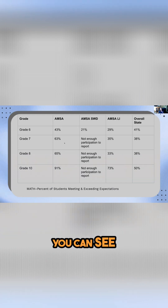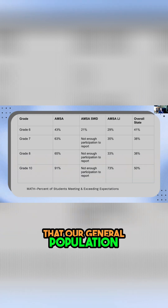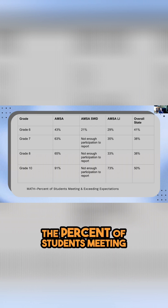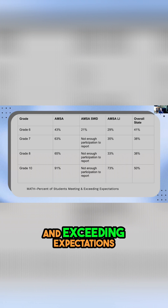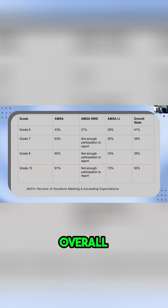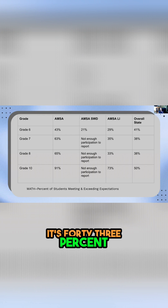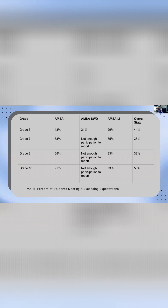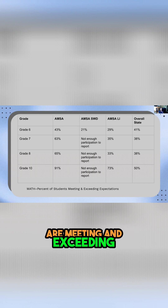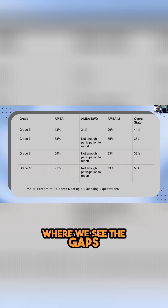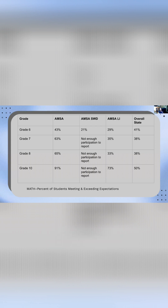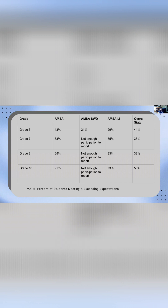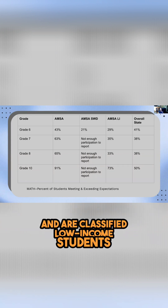At AMSA, you can see that our general population is doing well. This is the percent of students meeting and exceeding expectations. So overall, in grade six, it's 43%. But when we look at the students with disabilities, only 29% are meeting and exceeding, and that's where we see the gaps. So again, we do better than the state, but we can see that our gap falls with students with disabilities and our classified low-income students.